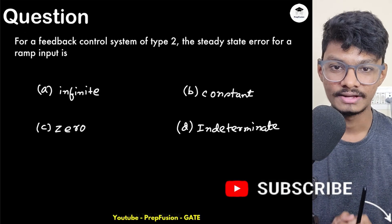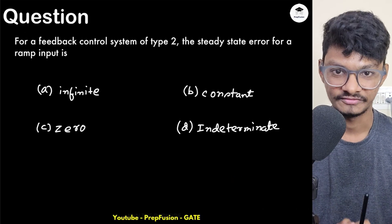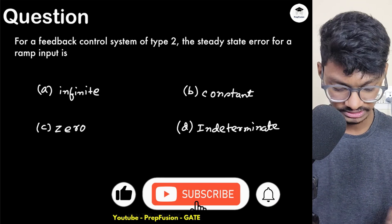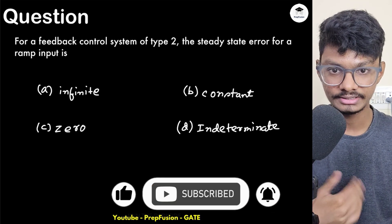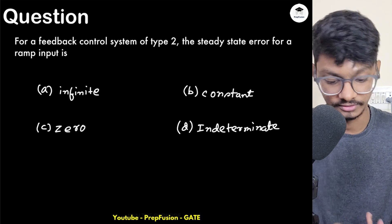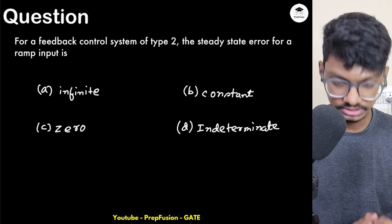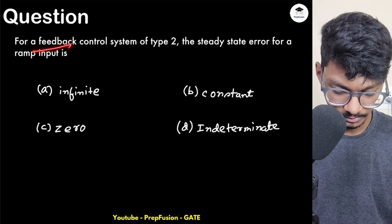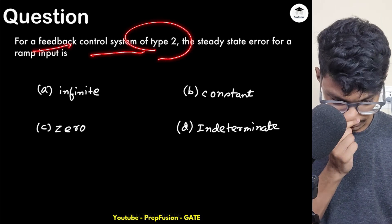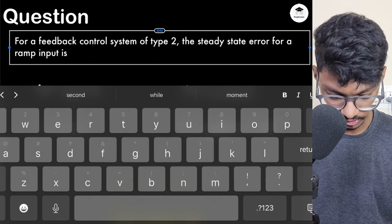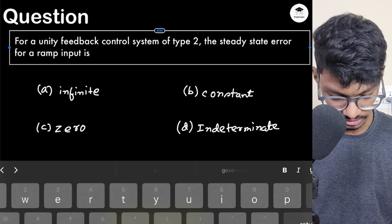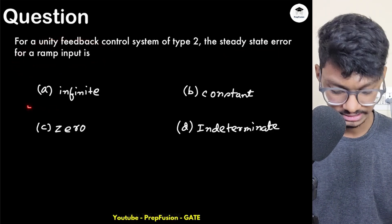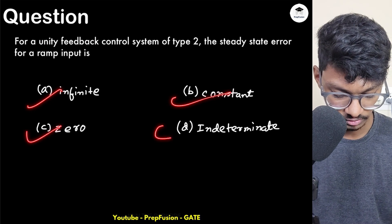Welcome back to PrepFusion. Today we solve an interesting question. The question is: for a unity feedback control system of type 2, the steady-state error for a ramp input is — is it infinite, constant, zero, or indeterminate?